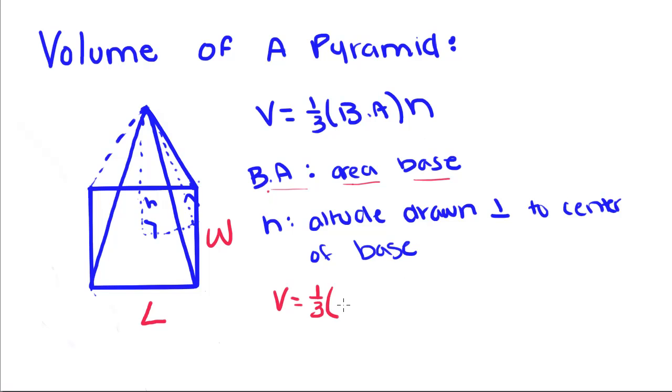To find the area of a square, we take length times width, which for a square we know would just be side squared because they have equal length and width. That's our final formula for volume.